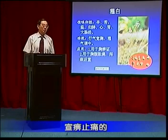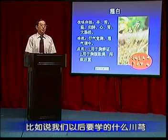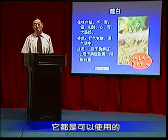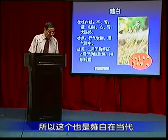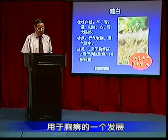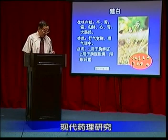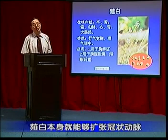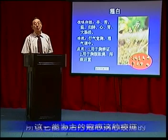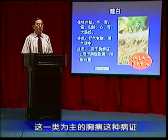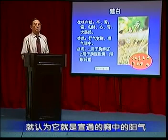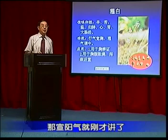比如我们以后要学的川芎、郁金、丹参等等，这一类的药都是可以使用的，这也是薤白在当代用于胸痹的一个发展。现代药理研究表明，薤白本身就能够扩张冠状动脉，增加冠状动脉的血流量，所以它能够治疗冠心病心绞痛这一类为主的胸痹。古代认为它就是宣通胸中的阳气，通阳也罢、行气也罢，实际上都没有本质的区别。